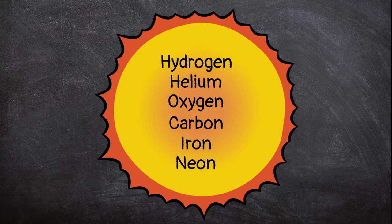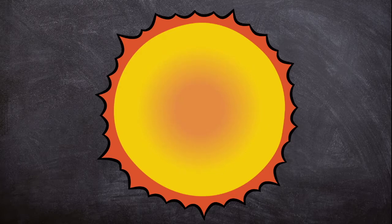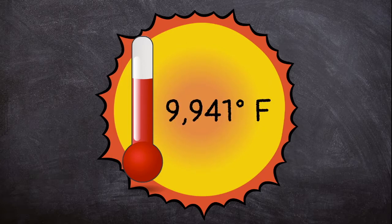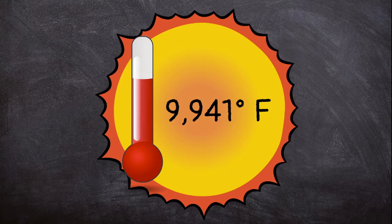There's another reason you could never visit the sun. It's incredibly hot. The sun's surface temperature is around 9,941 degrees Fahrenheit, 5,500 degrees Celsius.